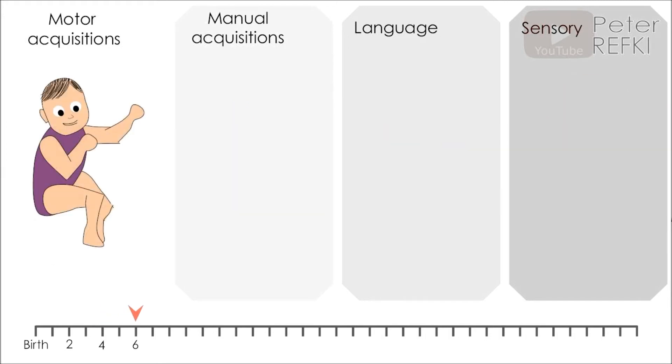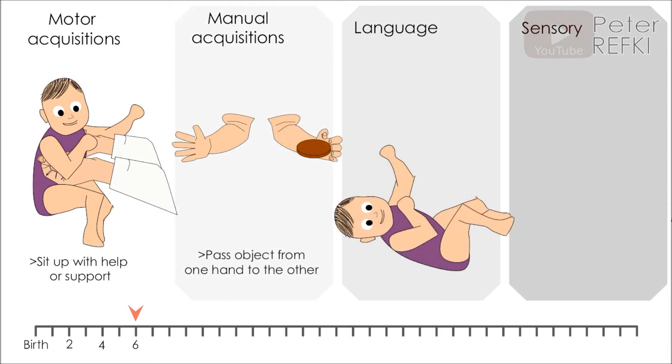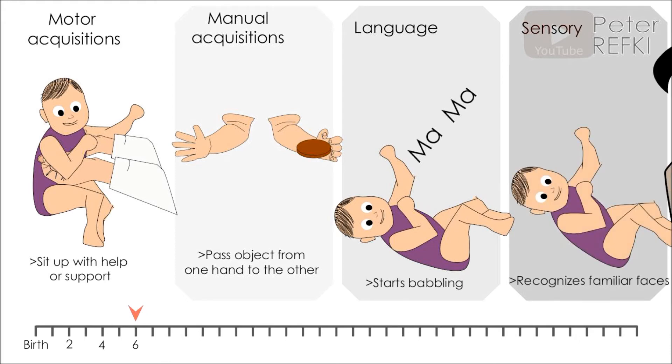At six months of age, the baby will be able to sit up with help or support, can pass an object from one hand to the other which coincides with the ability to chew and eat a biscuit alone, starts babbling, and recognizes familiar faces.